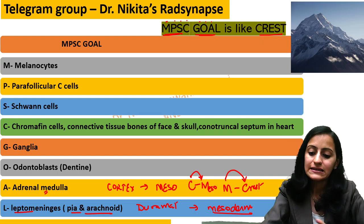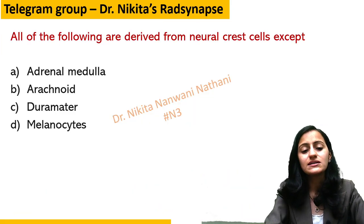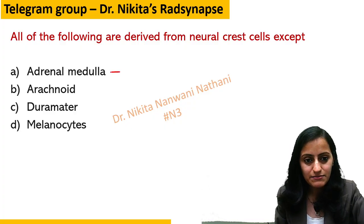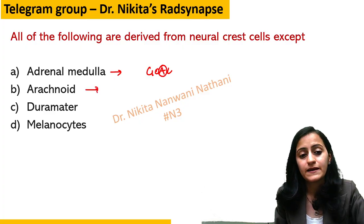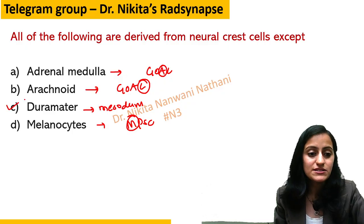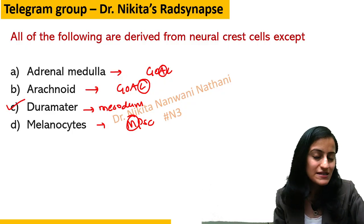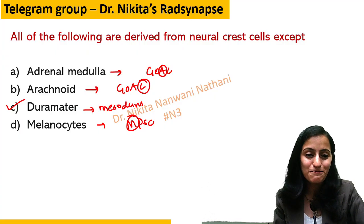Now back to the MCQ: all of the following are derived from neural crest cells except — adrenal medulla? Yes, A in MPSC GOAL stands for adrenal medulla. Arachnoid? Yes, L for leptomeninges includes arachnoid. Melanocytes? Yes, M for melanocytes. Dura mater? No — dura mater is from mesoderm, not neural crest cells. So the answer is dura mater.